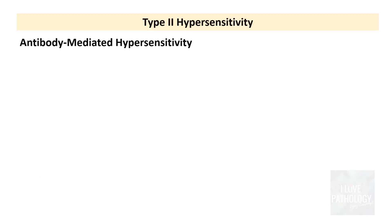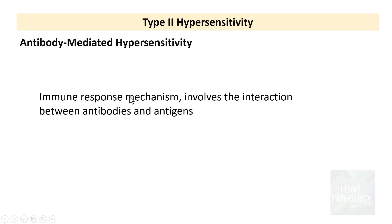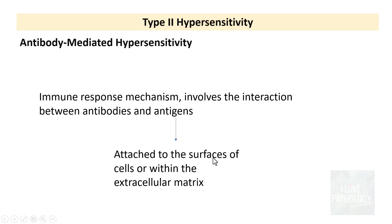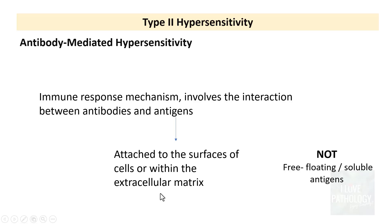Type 2 hypersensitivity is also referred to as antibody mediated hypersensitivity. What happens here is that there is an immune response mechanism which involves the interaction between antibodies and antigens — that is why it is called antibody mediated hypersensitivity. The antigens are attached to the surfaces of the cells or within the extracellular matrix. Remember: free floating soluble antigens are implicated in type 3 hypersensitivity, which we will study later.